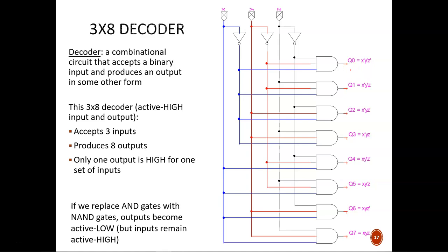This particular setup uses active high input and outputs, so the specially selected output line holds a value of 1, while all of the unselected lines hold a value of 0. If we instead wanted active low outputs, we could simply replace each of the AND gates with NAND gates. That would cause the specially selected output line to hold a value of 0, while all the others equal 1.